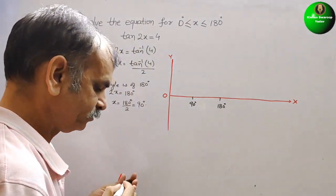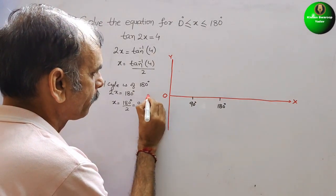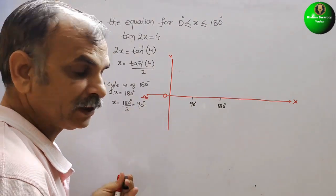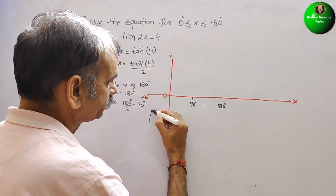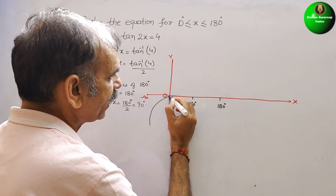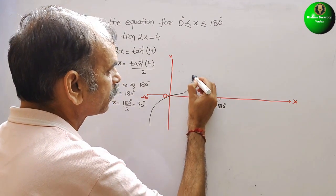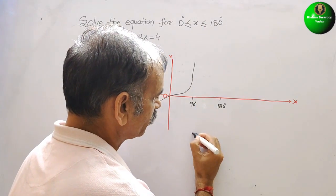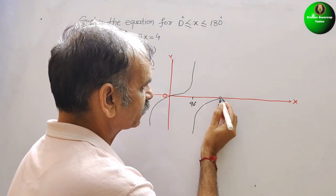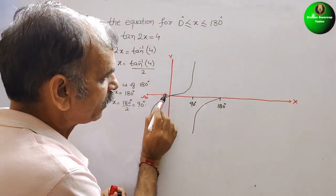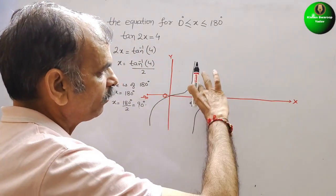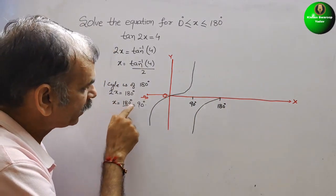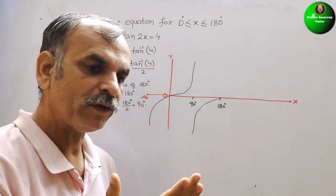We know that minus 90° is on this side. So our tan cycle will start like this and end like this. From 90°, after 90° it will start like this. This is your one complete cycle — up then full down. One complete cycle is of 180°. But here we have to complete it in 90°, so we need to make two cycles.